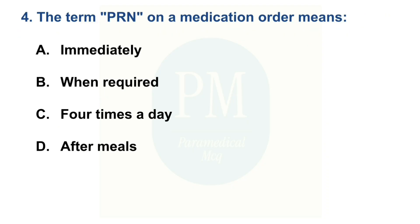The term PRN on a medication order means. Option A: Immediately. Option B: When required. Option C: 4 times a day. Option D: After meals. The correct option is Option B — When required.